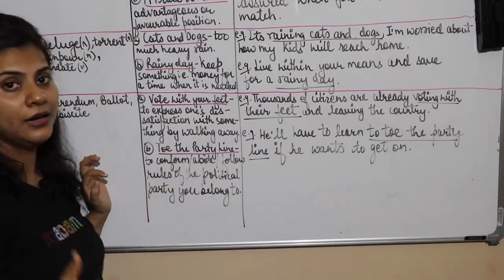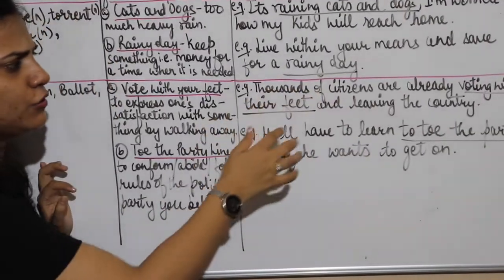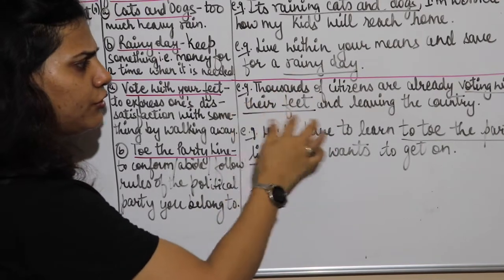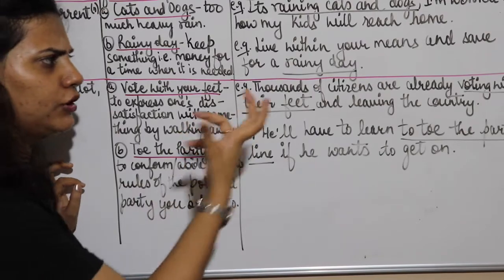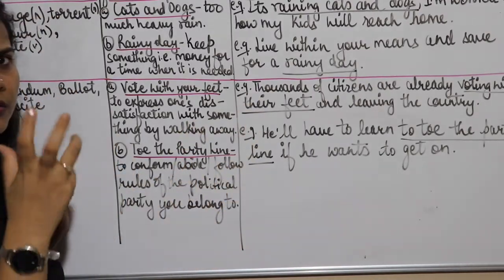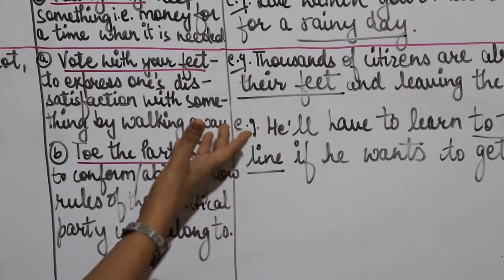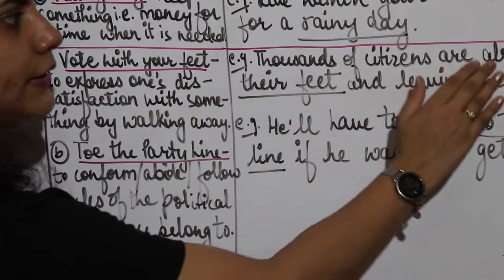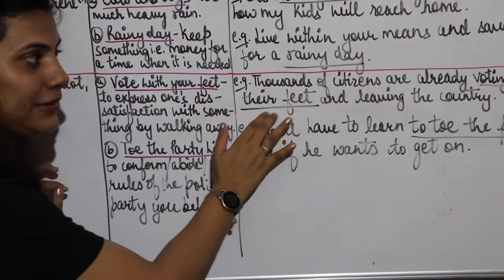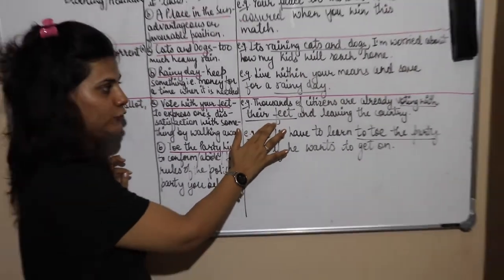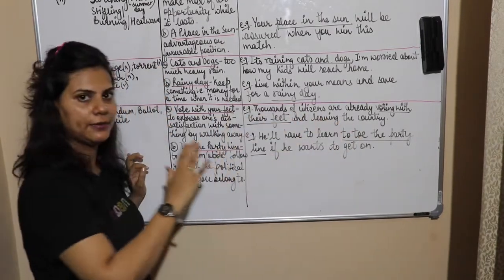An example: 'Thousands of citizens are already voting with their feet and leaving the country.' This is about a country where there is a lot of turmoil, chaos, and upheaval. The people there are voting with their feet — after voting, they are leaving the country — showing their dissatisfaction and distrust in a negative sense. So 'vote with your feet' is used when we show dissatisfaction or lack of trust in something.